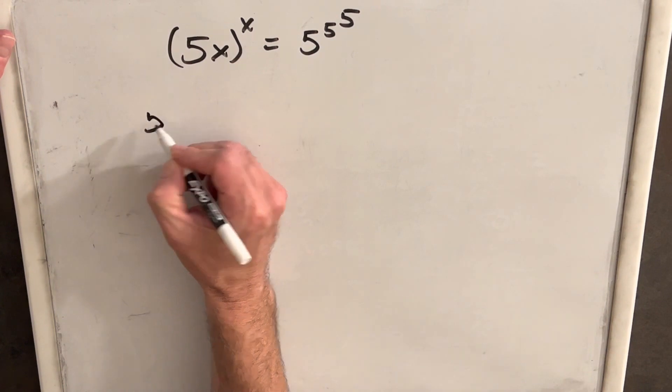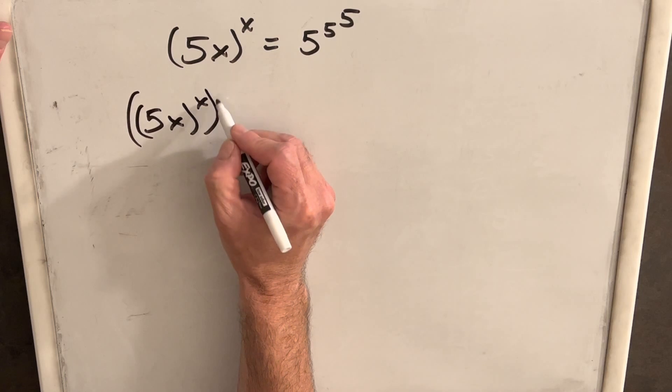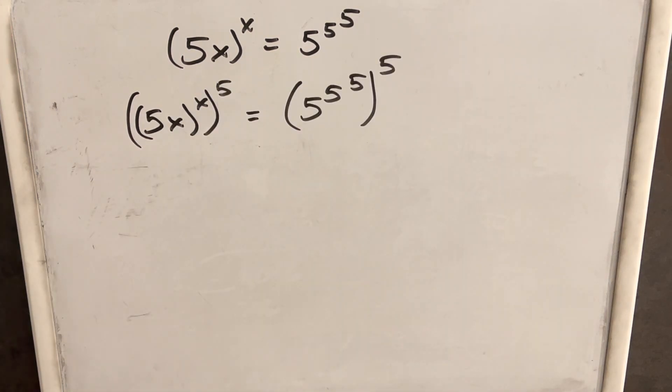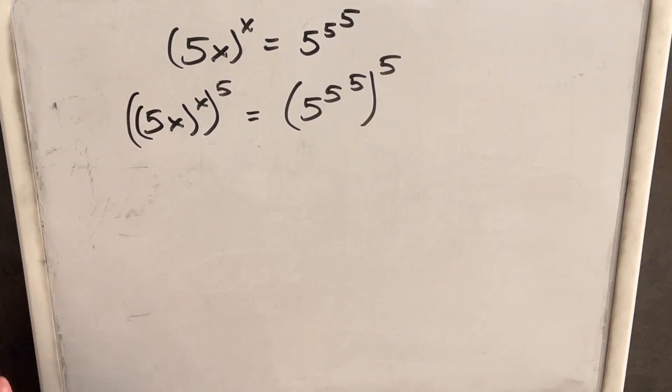So what I'm going to do is I'm going to raise both sides to the 5. We have a lot of 5s, so I'm going to raise both sides to the 5. We just need to be very careful with the exponent rules because it's very easy to make a mistake with the parentheses and with the exponent tower.